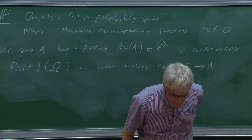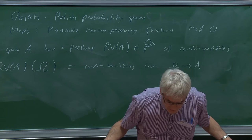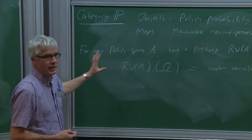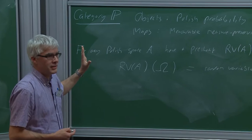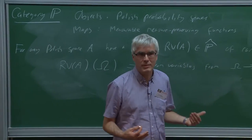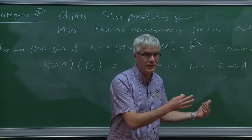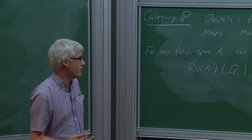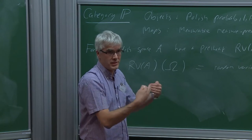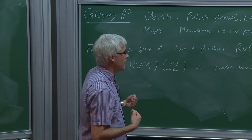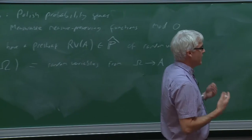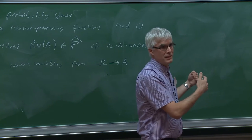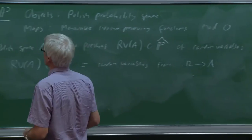The starting observation is that this pre-sheaf of random variables is actually a sheaf — and it's a sheaf for what will turn out to be a Grothendieck topology, which I'll verify later. It will be the atomic topology, meaning every map in the category P is itself considered as a cover — just the singleton map is a cover. I want to now state the main lemma used to see that random variables are a sheaf with respect to this family of covers.